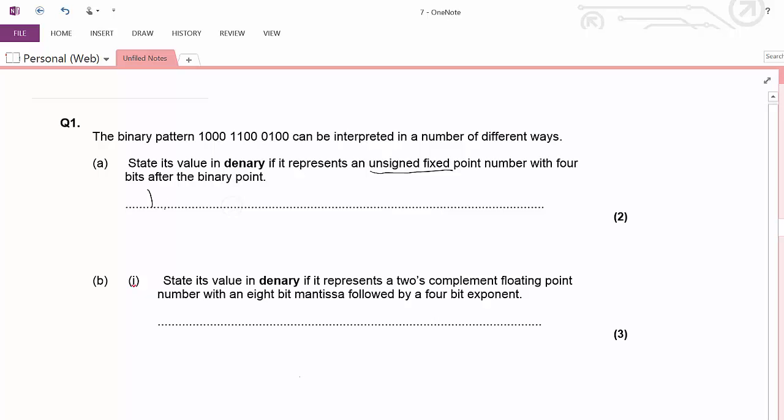So what we've got is 1, 0, 0, 0, 1, 1, 0, 0, binary point, 0, 1, 0, 0.